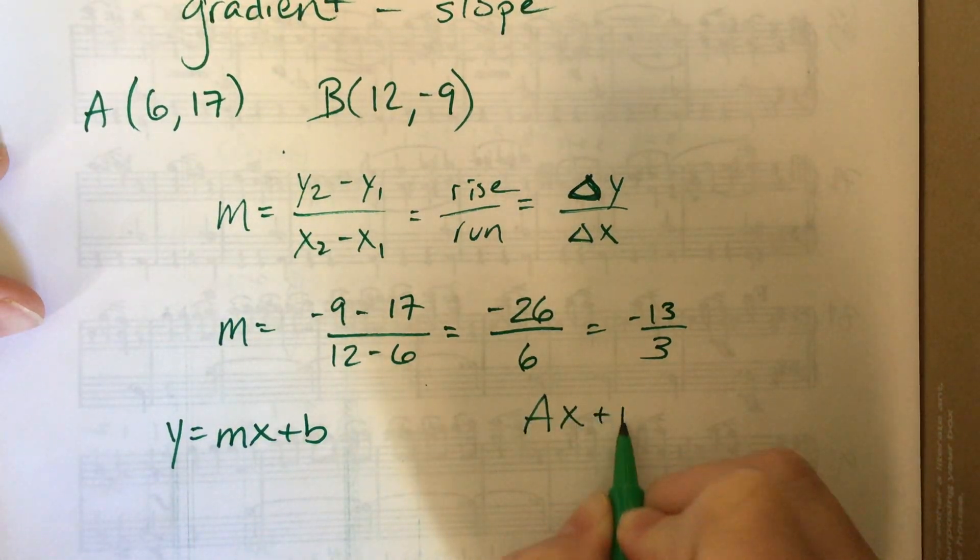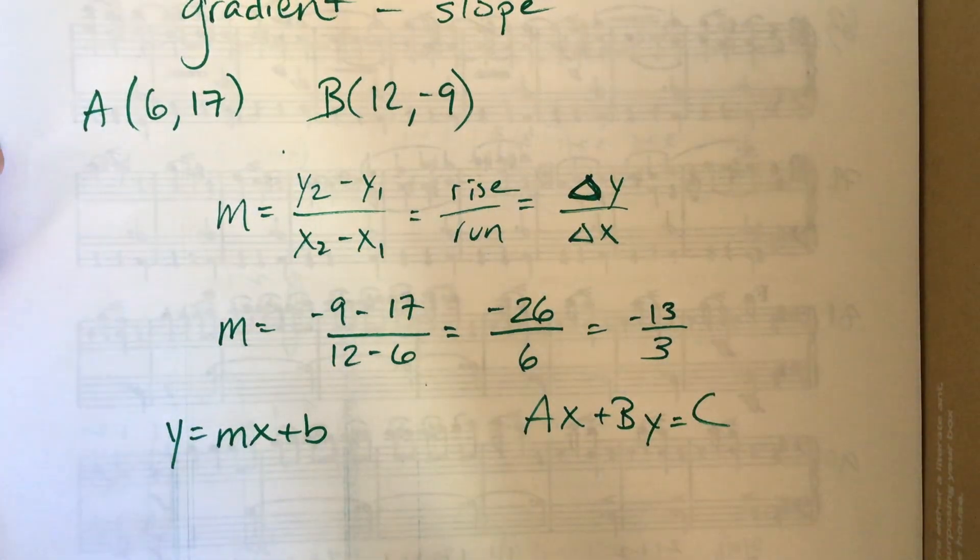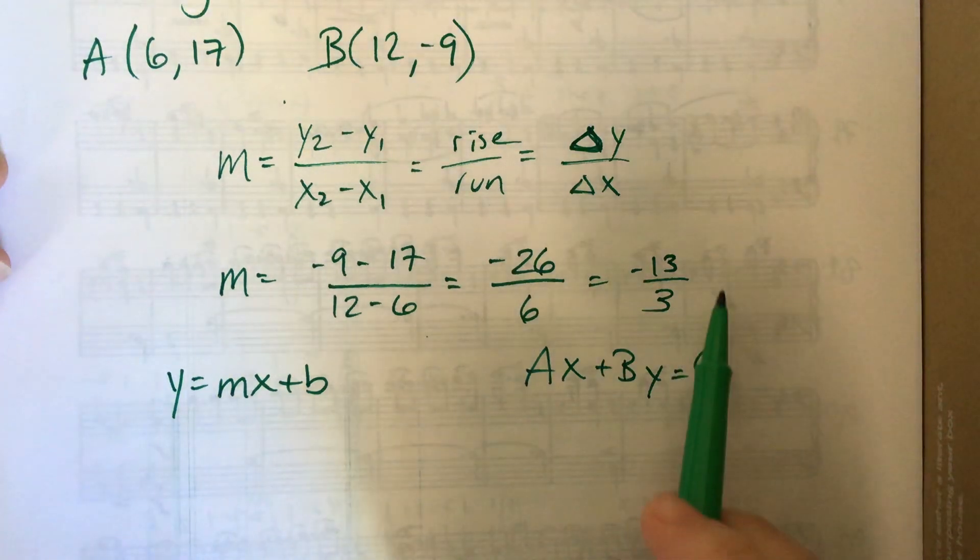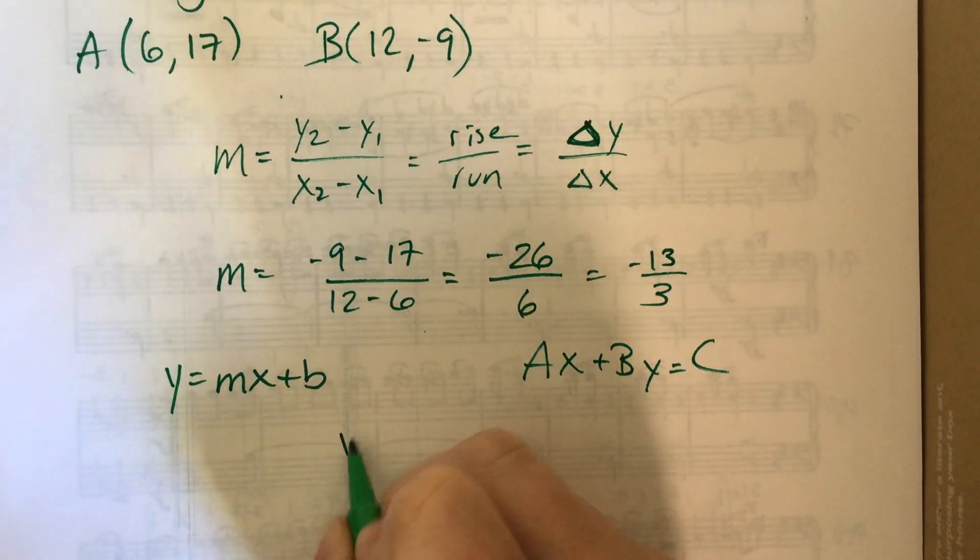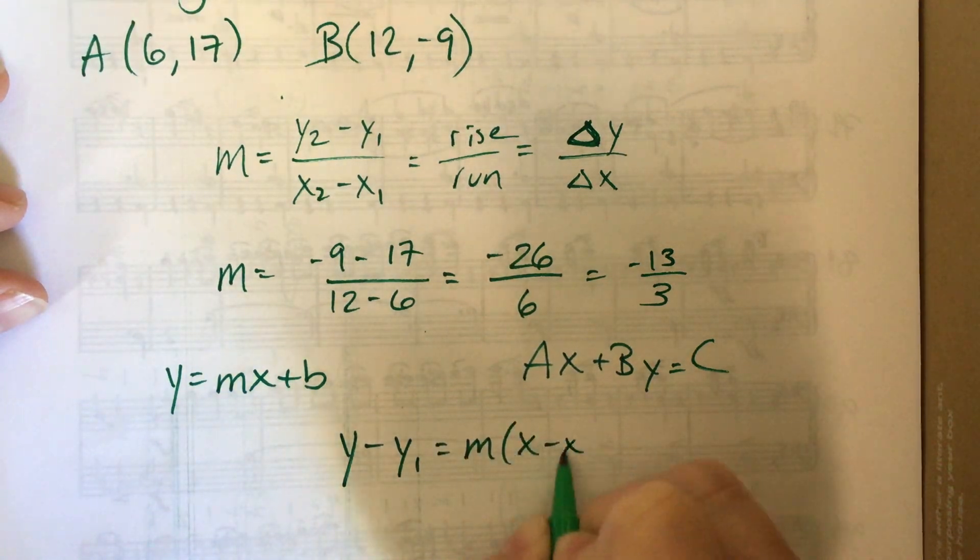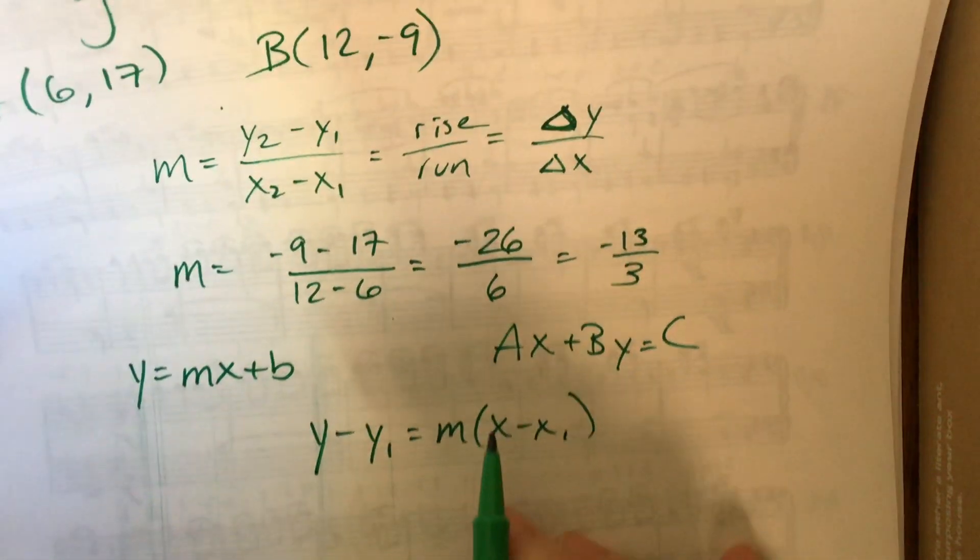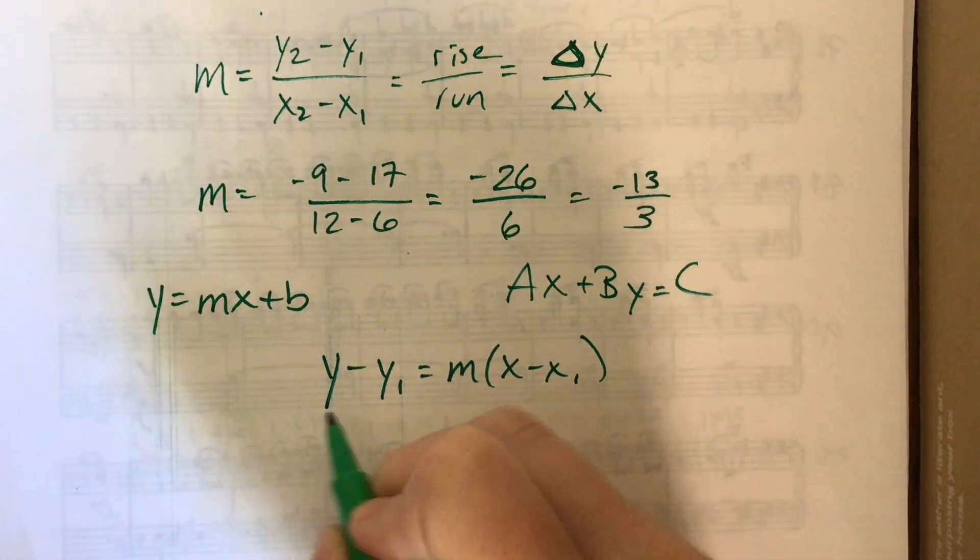Or you could have the standard form where a, b, and c are all integers. So what I like to do when I have something like this, okay pause, so we also have y minus y1 equals m times x minus x1 that you can use and plug everything in and so I can find the equation of the line. I'm expecting this to be a review.